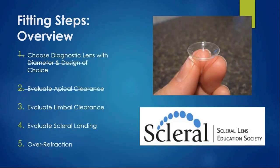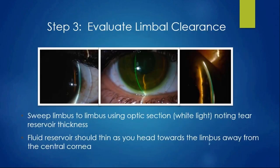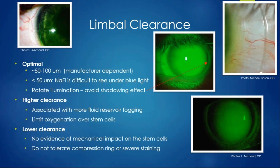After apical clearance, evaluate limbal clearance by sweeping nasal to temporal and vice versa using the white light optic section, noting the tear reservoir thickness all the way across. We want approximately 50 to 100 microns, depending on lens design. When you get less than 50 microns, it's very hard to see the fluorescein dye under there. When worried about touching, use the OCT—have the patient gaze in different directions and measure exactly how much clearance you have. Higher clearance can cause complications like fogging and limits oxygenation, while lower clearance risks staining and a compression ring.